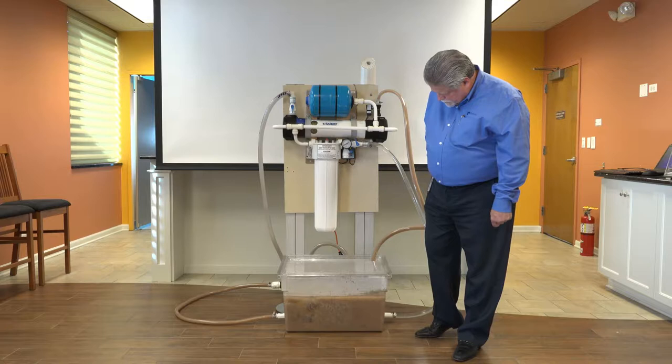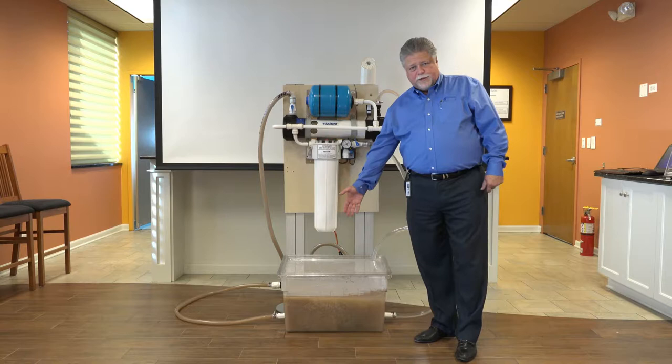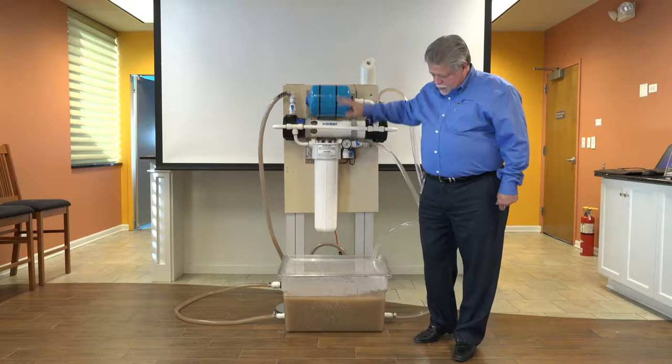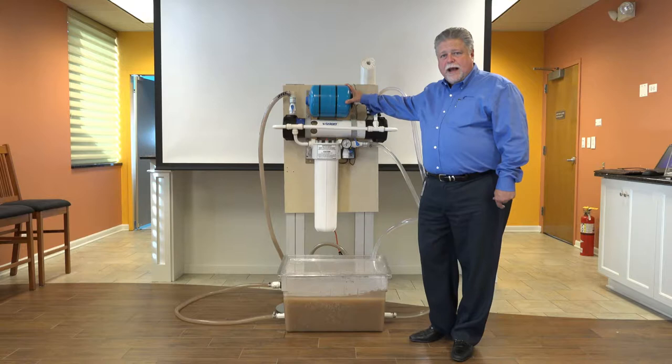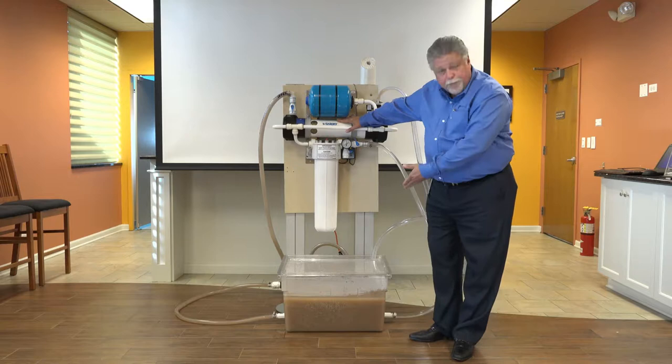As you can see, all that particulate matter that was captured by our UFL was now backflushed and sent to the drain. All that matter, if it's in your water supply, would have gone into your equipment. Using the Antunus Vision system, we can easily self-clean and backwash our cartridges for a much longer life and protection of your equipment. The proof is right there. Thank you for your attention, and if you need anything, please reach out to your local Antunus sales manager or your local rep. We'll be happy to assist.